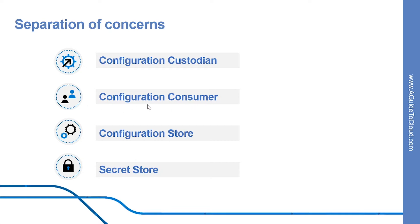Configuration consumers are responsible for defining the schema for the configuration that needs to be in place and then consuming the configuration values in the application or library code. Configuration store is the underlying store that is leveraged to store the configuration. While this can be a simple file, in a distributed application this needs to be a reliable store that can work across environments.